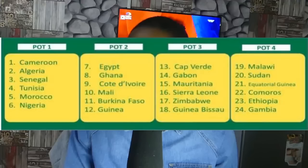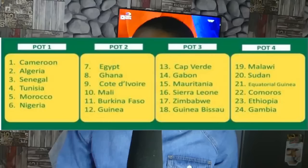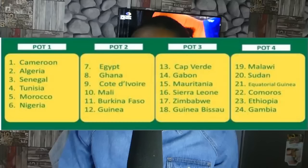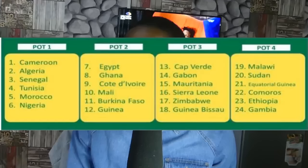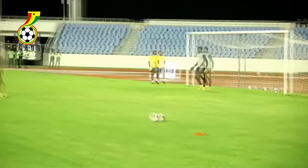Pot 1 contains the host Cameroon, holders Algeria, Senegal, Tunisia, Morocco, and Nigeria. Pot 2 has Egypt, Ghana, Côte d'Ivoire, Mali, Burkina Faso, and Guinea. Pot 3 has Cape Verde, Gabon, Mauritania, Sierra Leone, Zimbabwe, and Guinea-Bissau. Pot 4 has Malawi, Sudan, Equatorial Guinea, Comoros, Ethiopia, and Gambia.